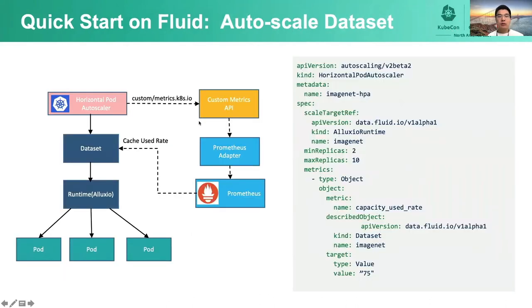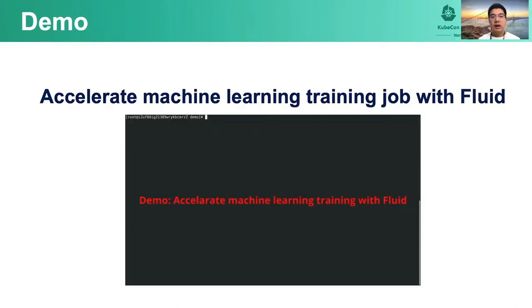We also support automatic elastic expansion of the dataset cache volume. When the data cache ratio reaches a certain percentage, data eviction will be triggered, which affects the throughput of data access. Therefore, we provide an automatic expansion mechanism: when the data cache reaches a certain threshold, we expand the distributed cache pods to provide greater caching capability. In this demo, we will show how to use Fluid to accelerate a machine learning training job, comparing training speed and final accuracy, and we will put this demo on our GitHub for your reference.